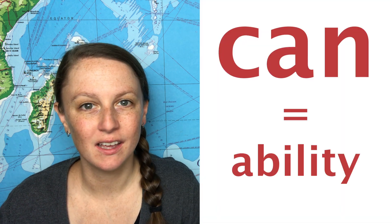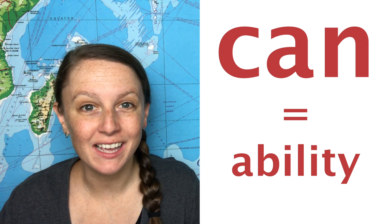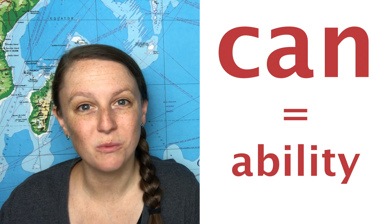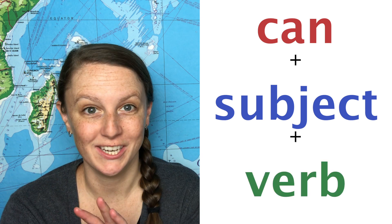We use the word 'can' to talk about abilities. So when we ask questions with 'can', we're asking about a person's abilities. To make a question with 'can', we need: can, subject, and the main verb of the question.